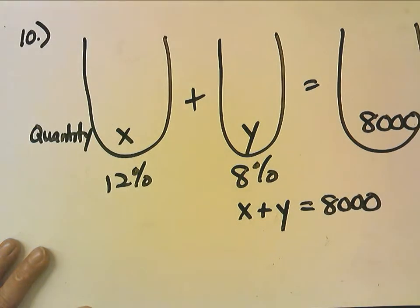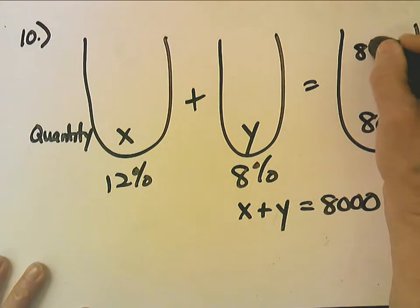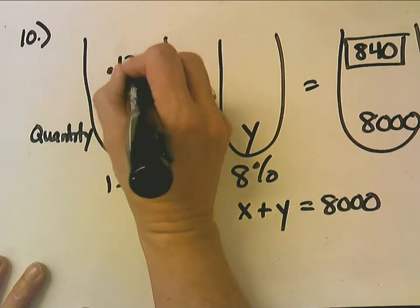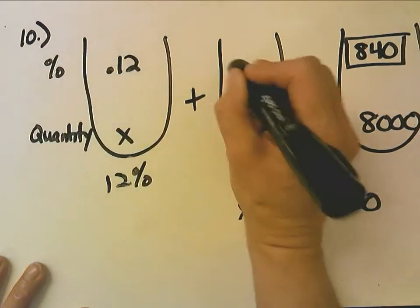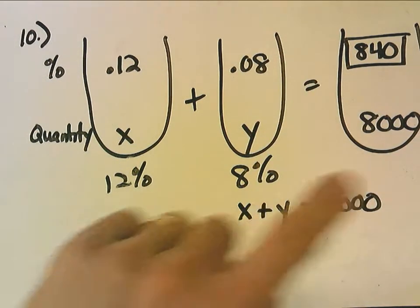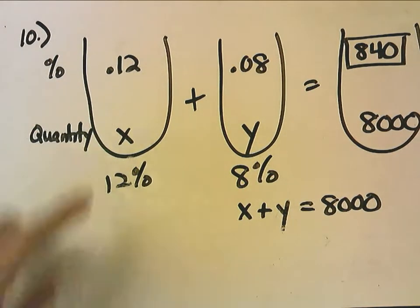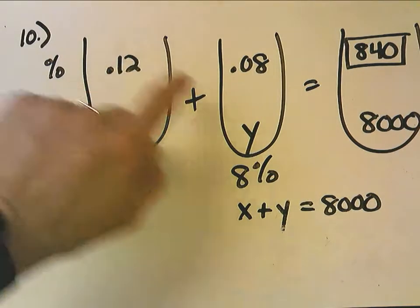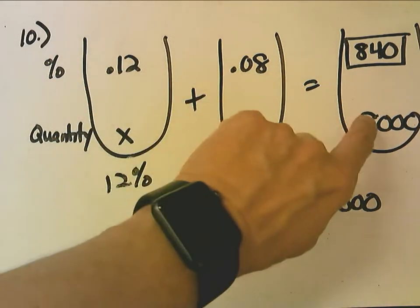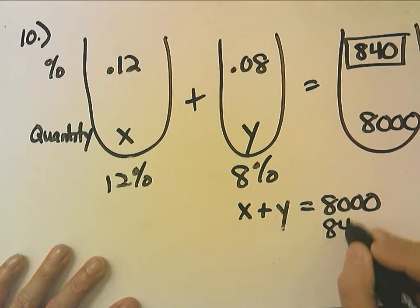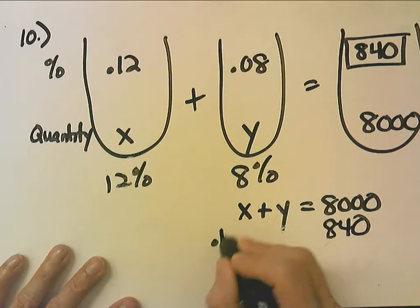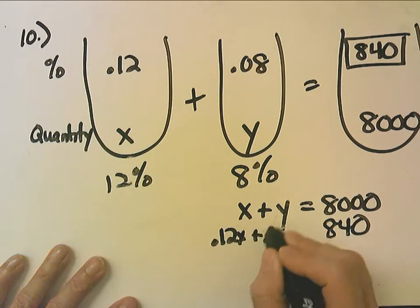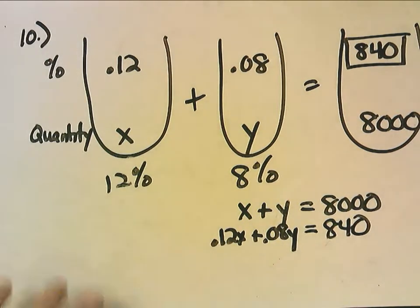Now, it says she receives $840 in interest. So that goes here. But remember, that is a total. Because this is .12, this is .08, and that's a total. So for my second equation, I do this times this plus this times this. But I do not do this times this because 840 is a total. So I have .12x plus .08y equals 840.